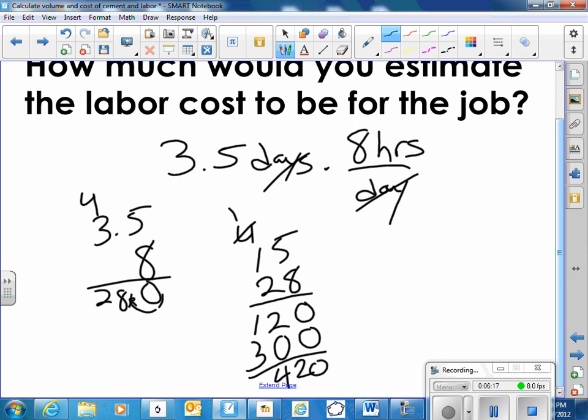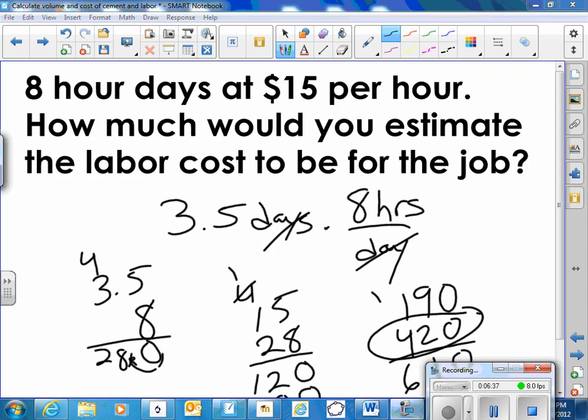So $420. So I think with the cement, it was what? $190 for the cement, $420 for the labor. $610 should be the total cost for the job. The labor part was the $420. Then the cement was the $190 for a total of $610.